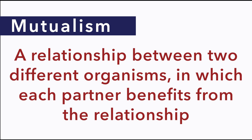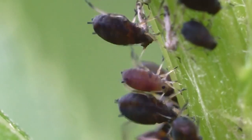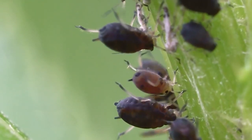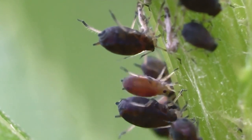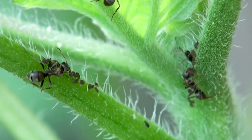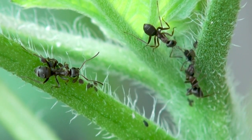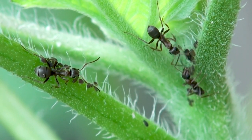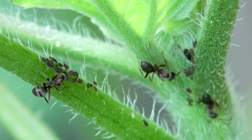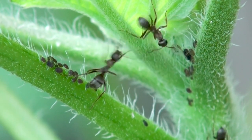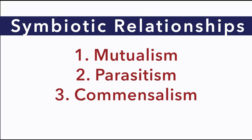Symbiotic relationships are common in the natural world. For example, aphids on a rosebush have a symbiotic relationship with the rosebush as they feed on it. Ants and aphids have a symbiotic relationship too. The ants protect the aphids from predators, and in return, they drink the sweet liquid that aphids excrete. There are three types of symbiotic relationships: mutualism, parasitism, and commensalism.